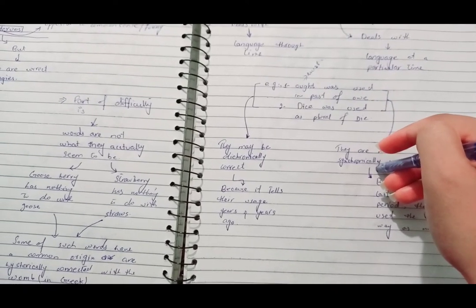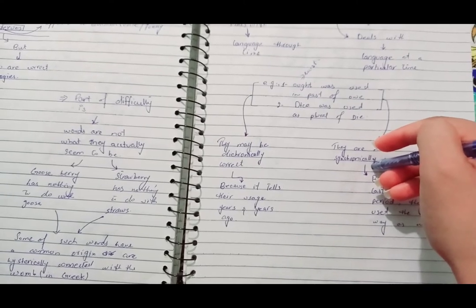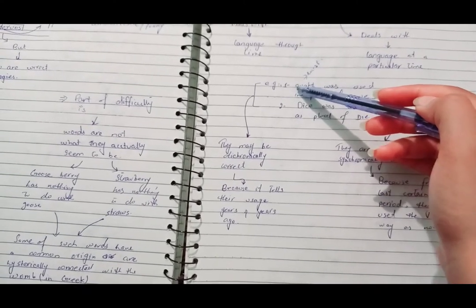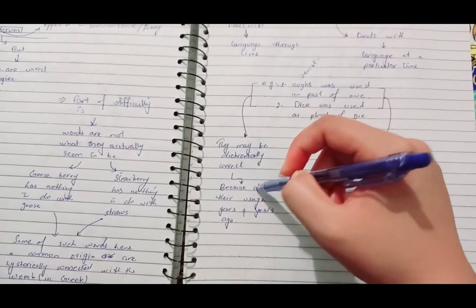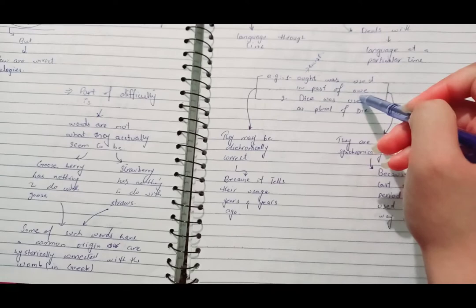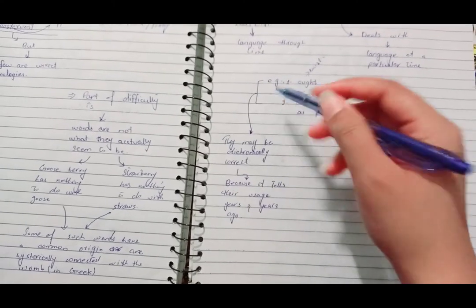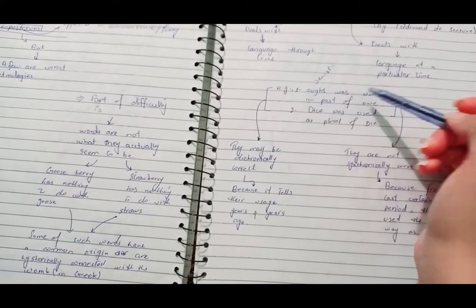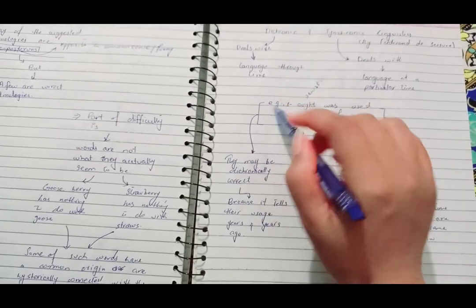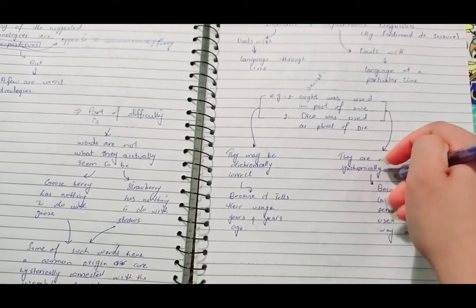If we see the sentence 'ought was used in the past tense of owe,' this is not synchronically correct because from a very particular time, ought is used for the sense of must. But this sentence is diachronically correct because in the sentence we are told that it was used in the past of owe. So it tells us the usage years and years ago. Diachronic deals with the study of the history of the word, and synchronic deals with the study of the words at a particular time.